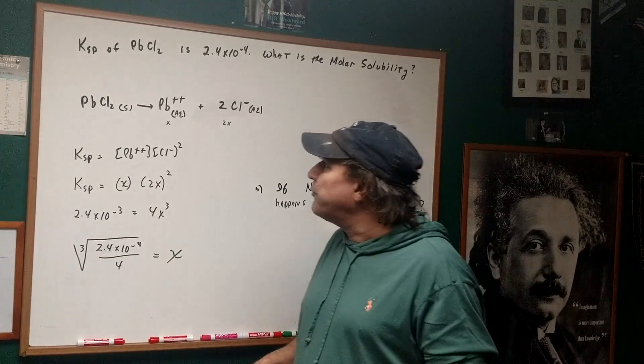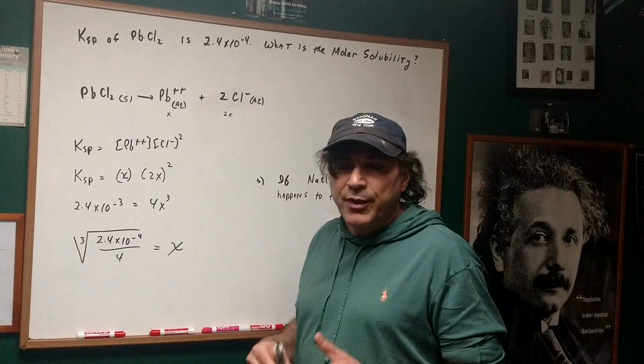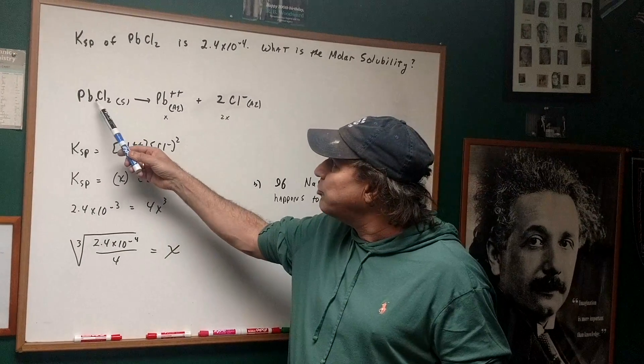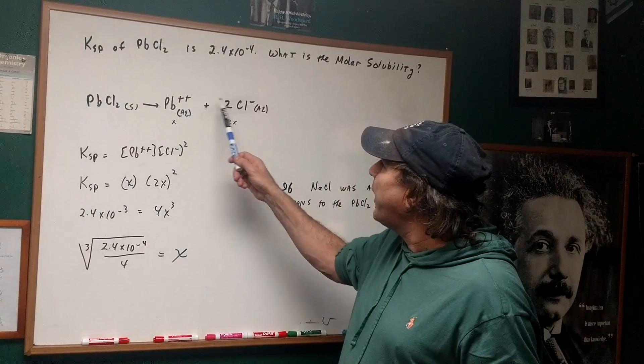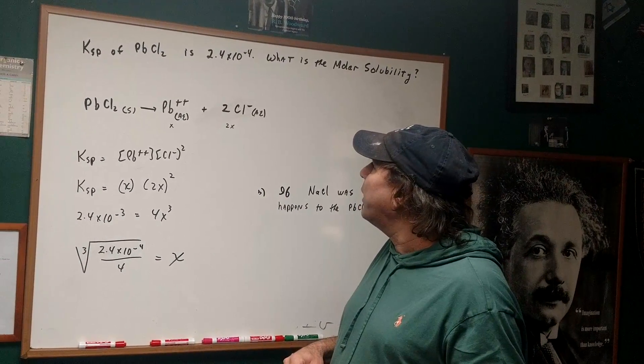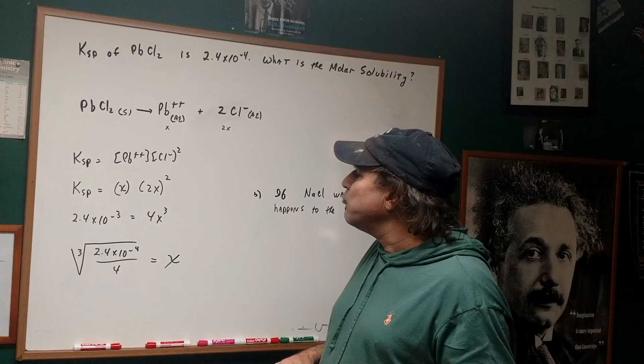What we would do is we would first start off and write the equation for the dissociation of lead chloride. PbCl2 breaks up into one mole of Pb++ and two moles of Cl-. Once I write the equation, the next thing I do is I write the KSP expression.